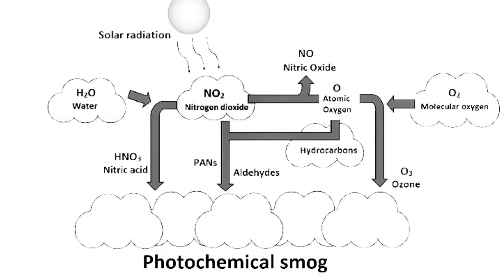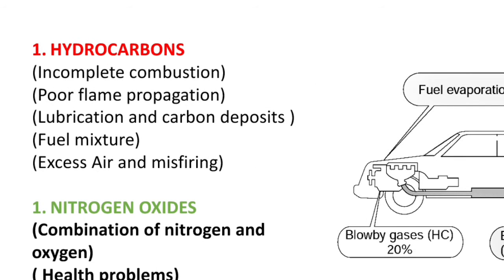Nitrogen oxides in the atmosphere mix with water to form HNO3. So NOx combined with H2O forms HNO3, which is nitric acid, and acid rain is created.